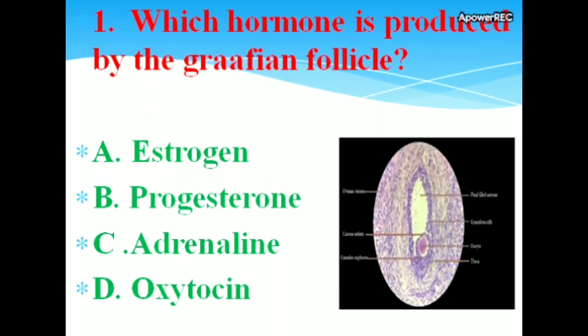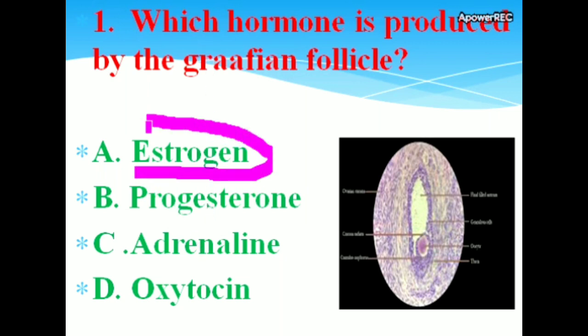Which hormone is produced by the Graafian follicle? The correct answer is estrogen. The Graafian follicle is a fluid-filled structure in the ovary in which an ovum develops prior to ovulation.